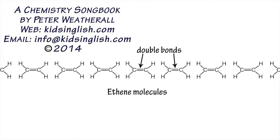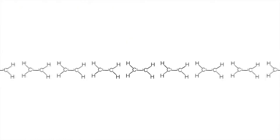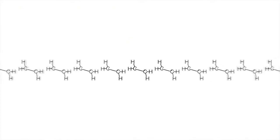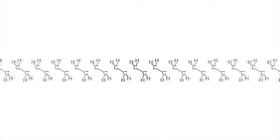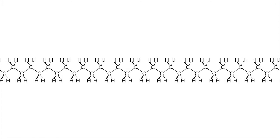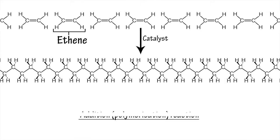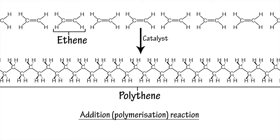Under the right conditions, the double bond between carbon atoms in ethene molecules can be partially broken, allowing them to form links to one another via the formation of single covalent bonds in what is known as an addition reaction, resulting in the formation of long chain molecules of polythene.